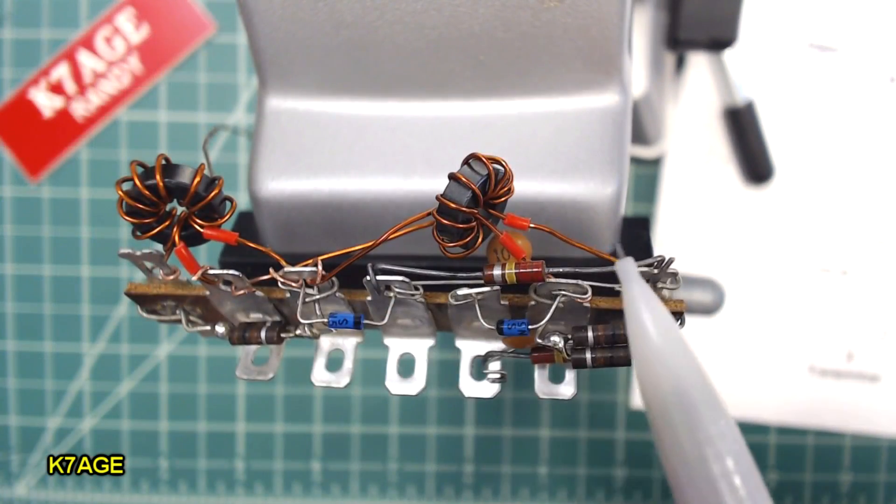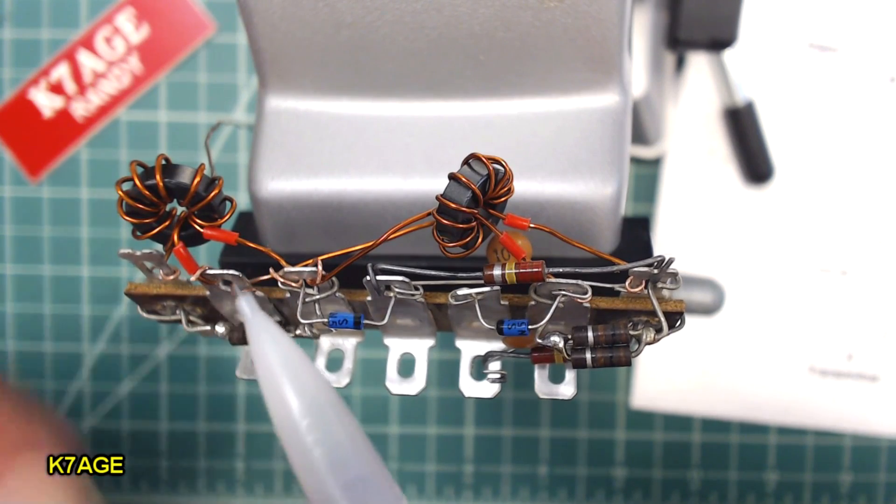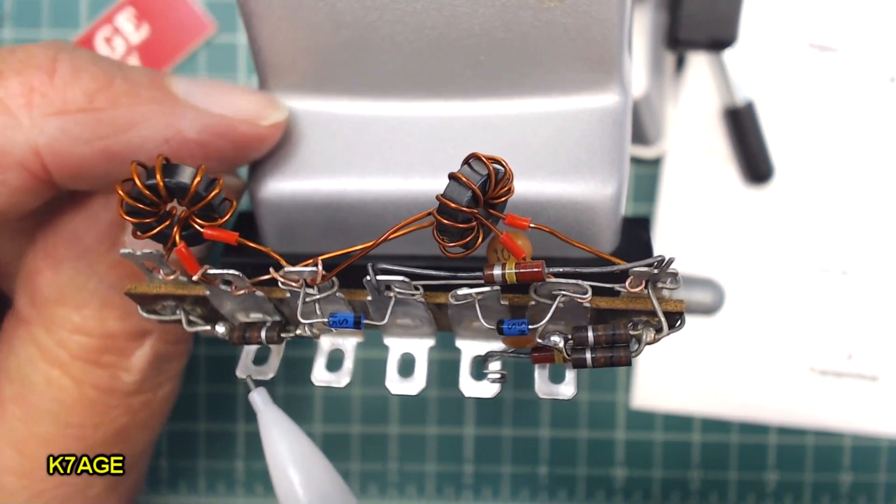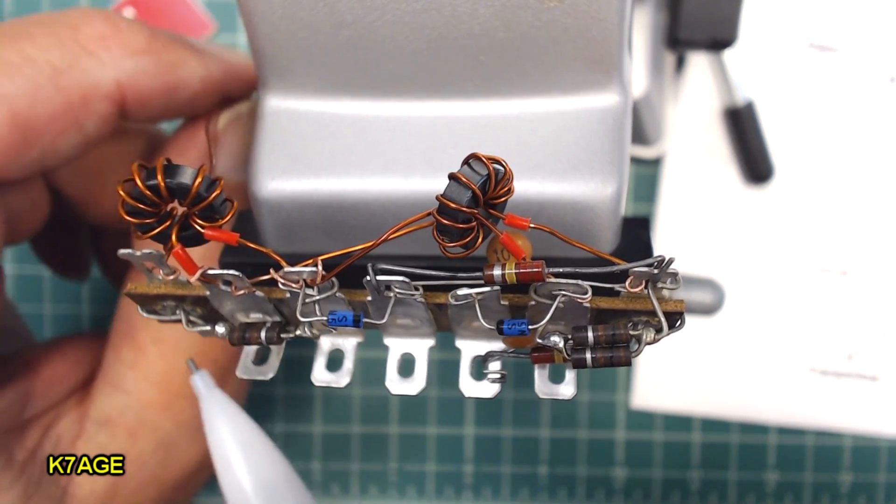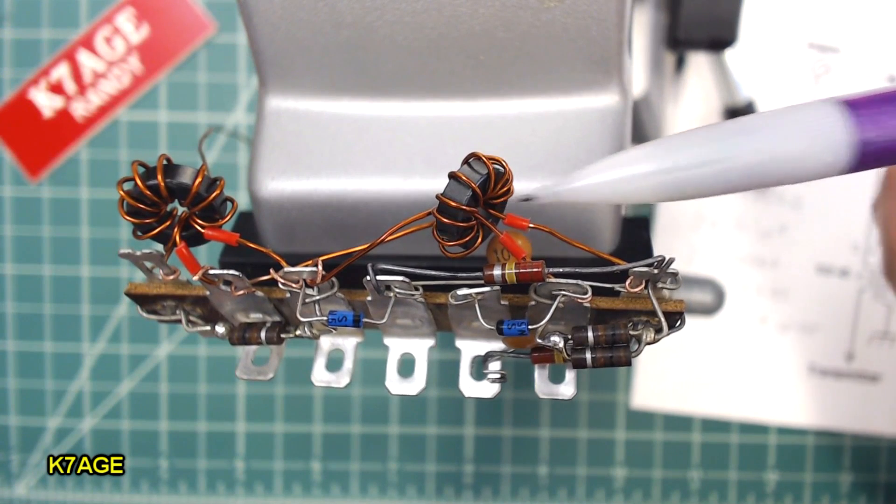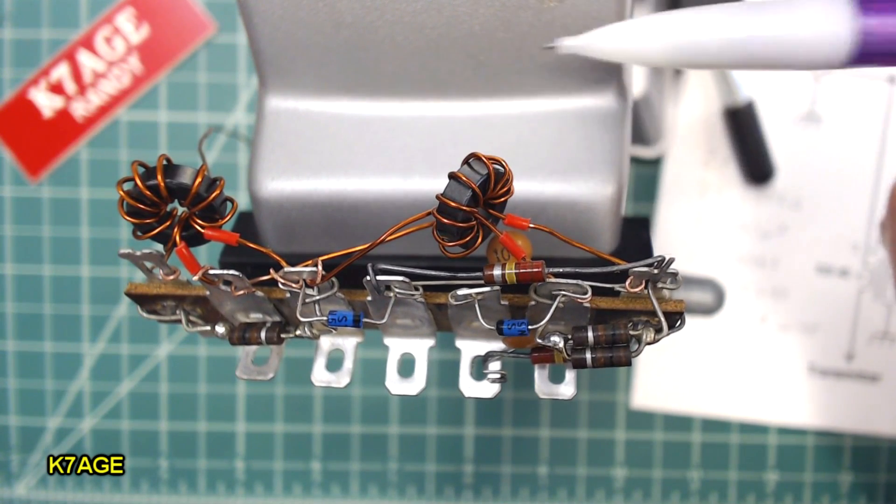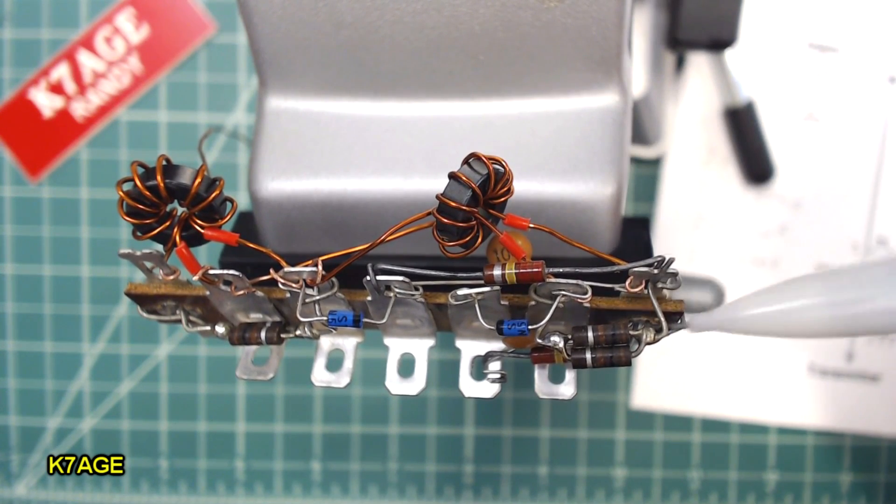So I have the toroids mounted on the solder lugs here. This is T1. You can see the two dotted leads going through in the same direction, so they're correct. And the output side the one turn goes towards the transmitter. This is T2. Again, you can see the two dotted leads or the two leads with the red insulation on it are going through in the same direction. So this is on pin seven,